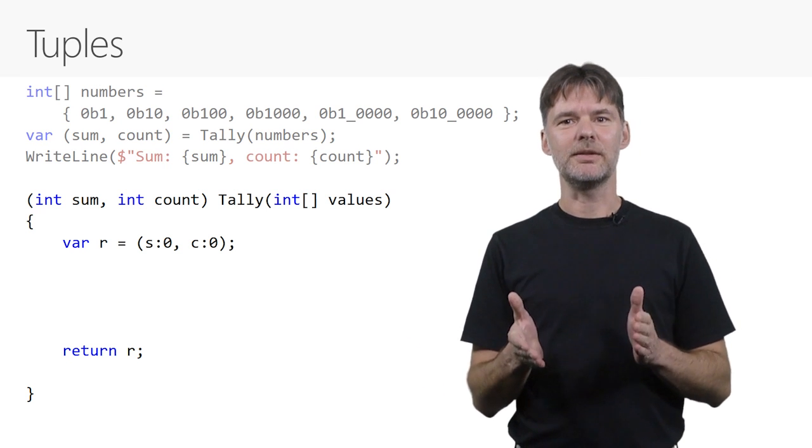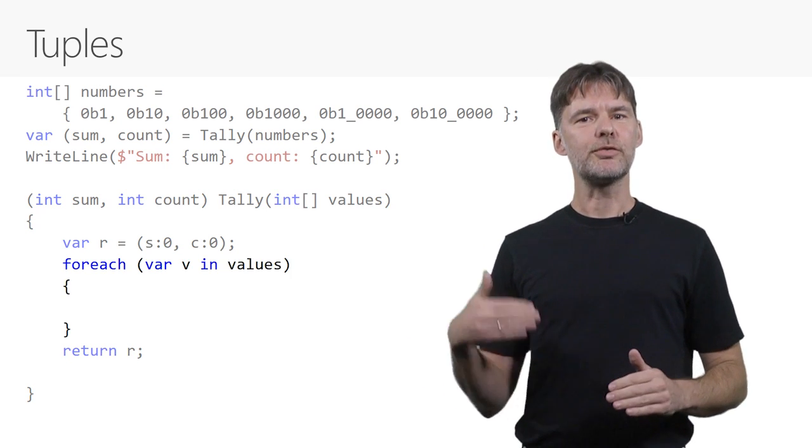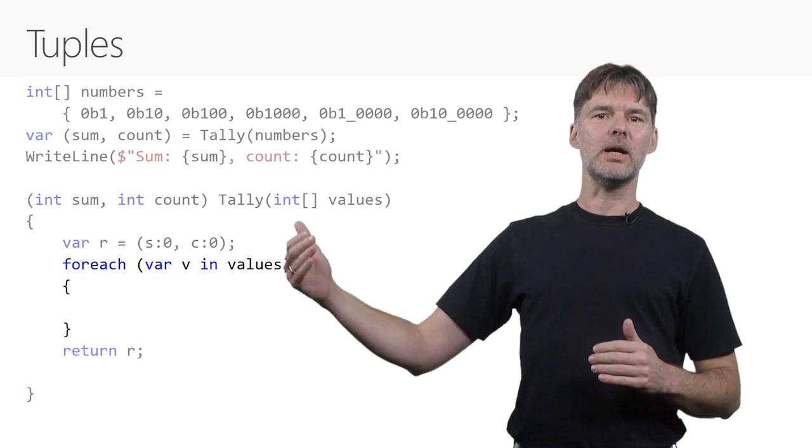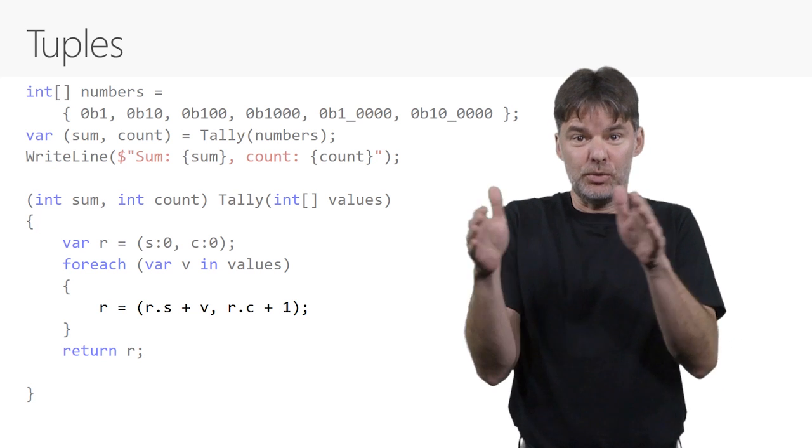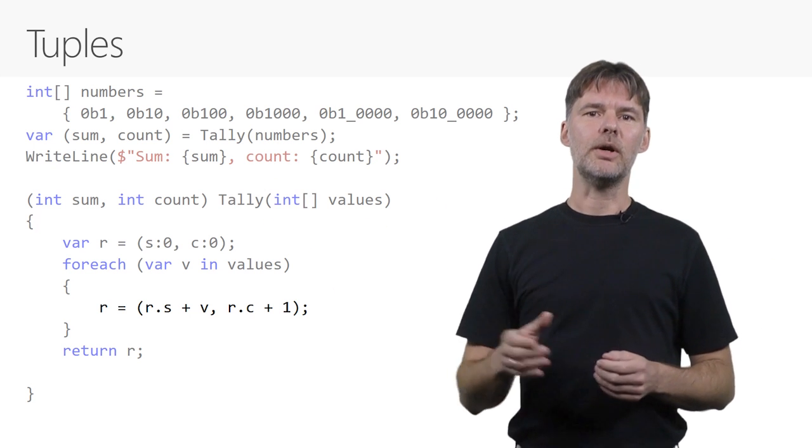Now let's go implement this method for real. We need a for-each loop to go through all our values, and each time around, we update the result tuple in r. I simply create a new tuple from the old one and reassign it into r.